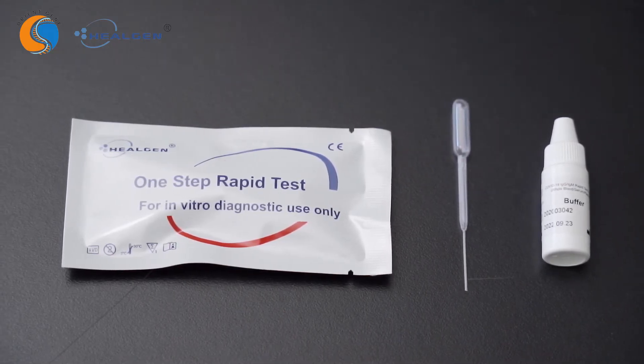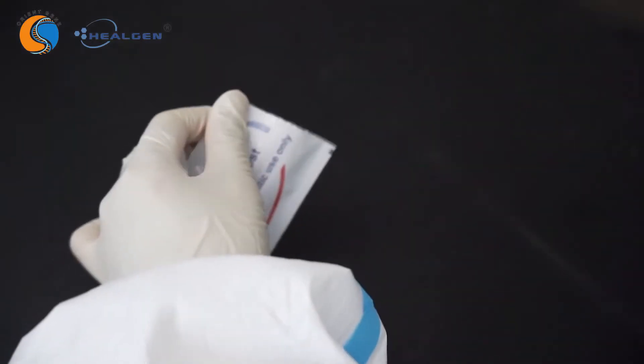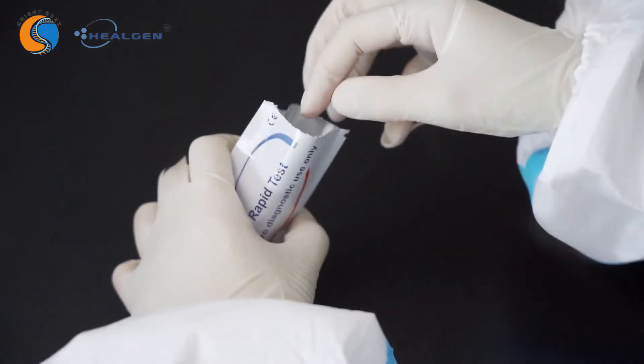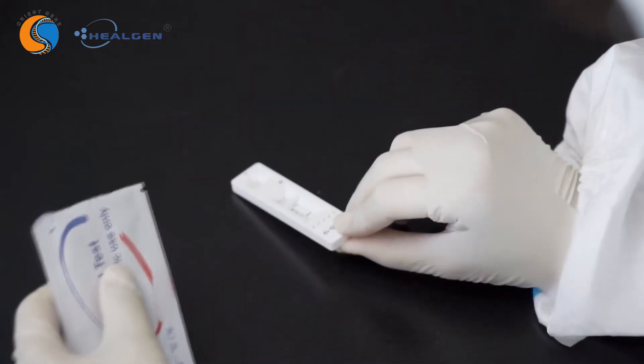Allow the test materials and specimen to reach room temperature before testing. Remove the test cassette from the sealed foil pouch. Do not open the pouch unless you are ready to begin the test. Place the test cassette on a dry, flat surface.